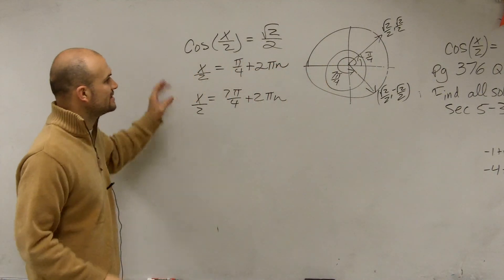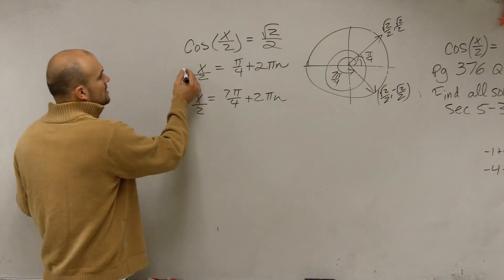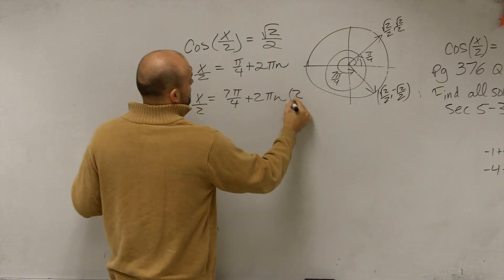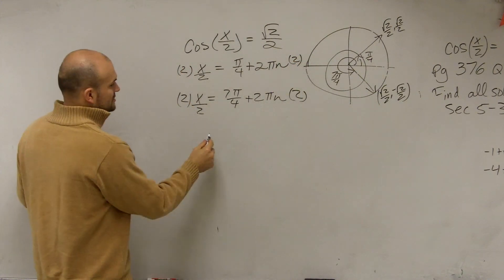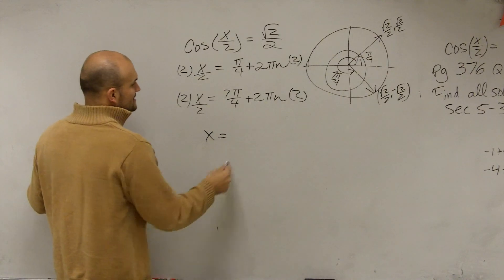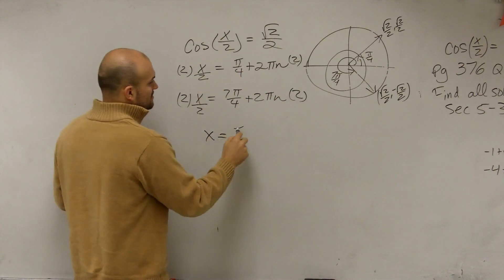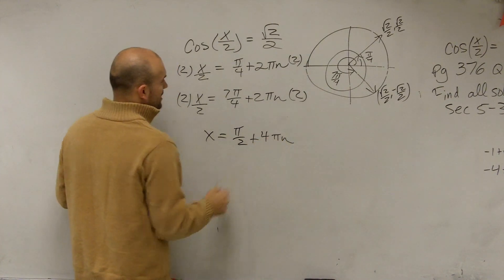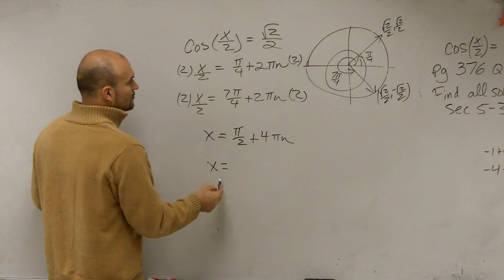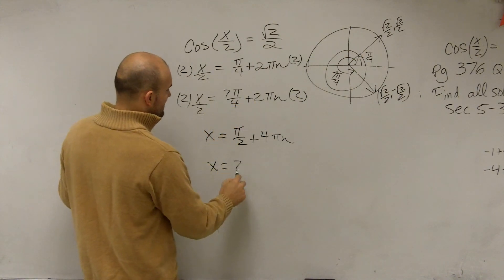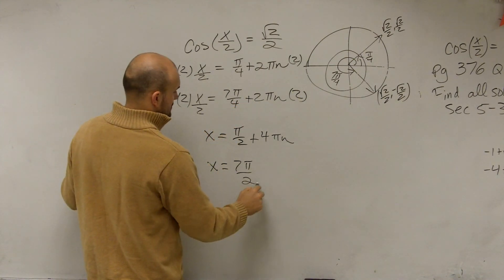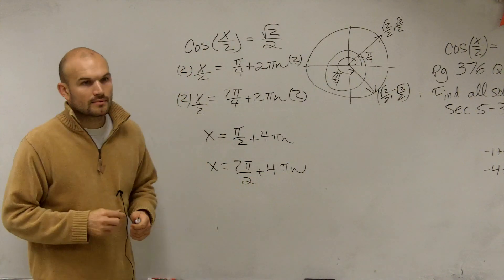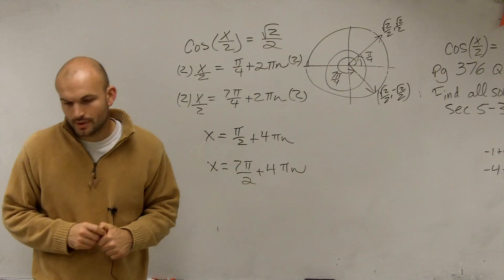Our last final step is we need to solve for x. To solve for x, I need to multiply both sides by 2, following inverse operations. Therefore, x equals 2 times pi over 4, which is pi over 2, plus 4 pi n. And then x equals 7 pi over 2 plus 4 pi n. And there you go.